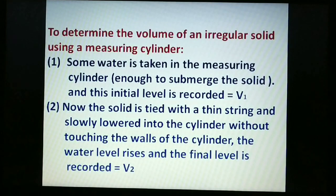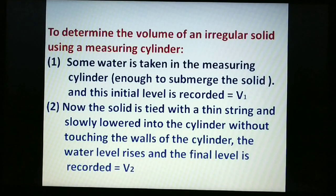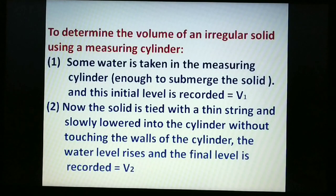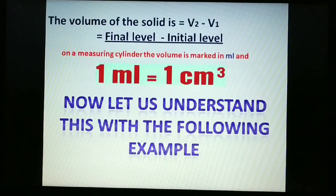To determine the volume of an irregular solid using a measuring cylinder: some water is taken in the cylinder, enough to submerge the solid, and the initial level is recorded as V1. The solid is tied with a thin string and slowly lowered into the cylinder without touching the walls; the water level rises and the final level is recorded as V2. The volume of the solid is V2 minus V1.